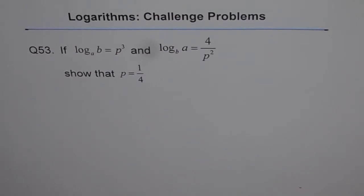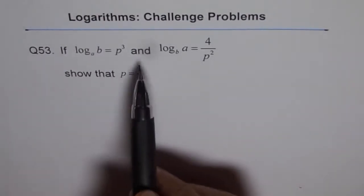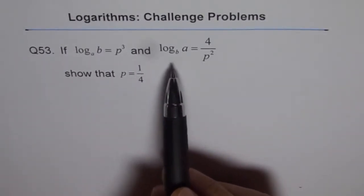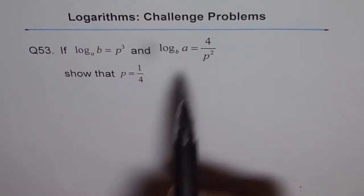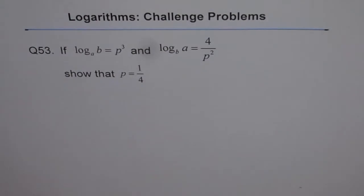Challenge problems on logarithms, question 53. If log base A of B equals P cubed and log base B of A equals 4 over P squared, show that P equals 1 over 4.